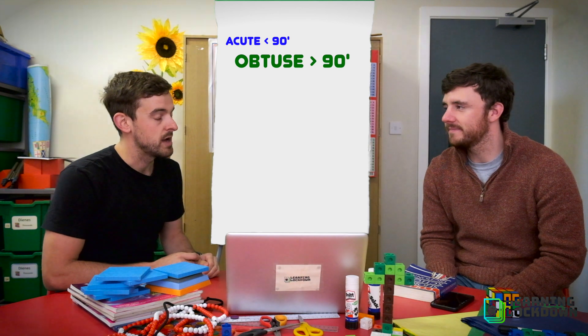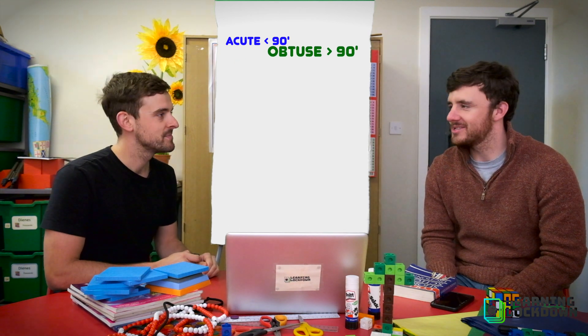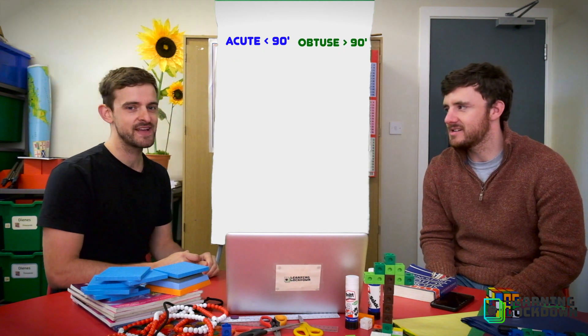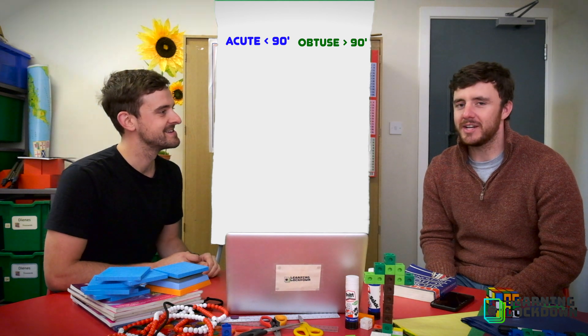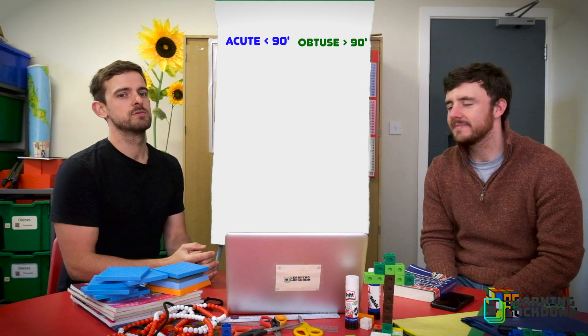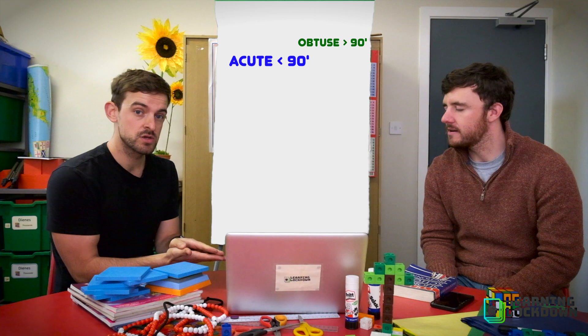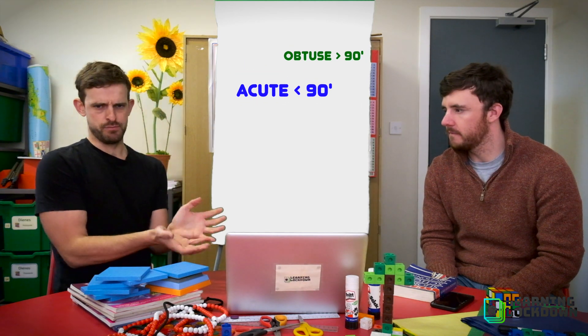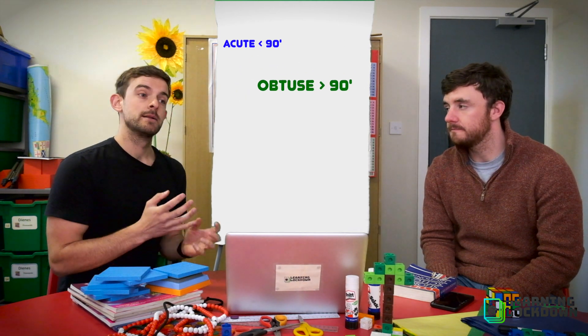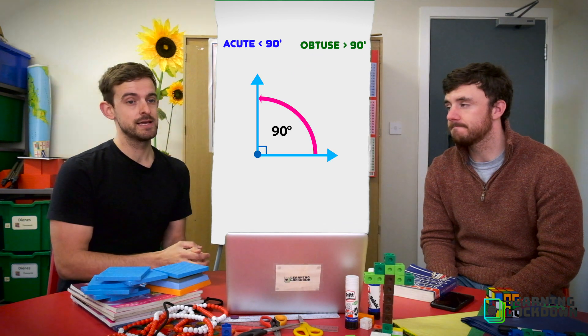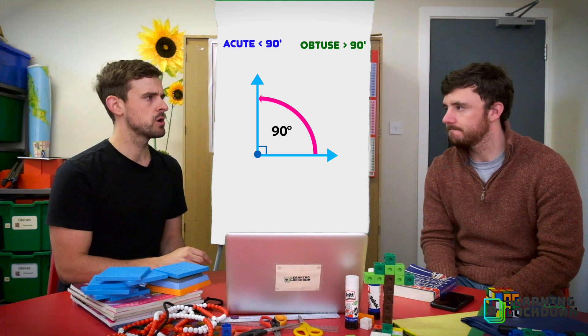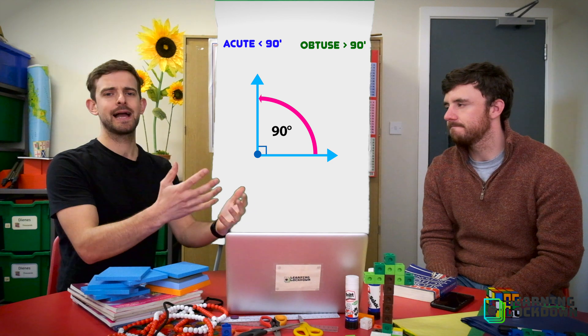Whatever helps you remember. Whatever helps you sleep at night. Whatever floats your boat. Whatever tickles your fancy. Whatever scratches your itch. So those are the two terms we need you to learn today. Acute, smaller than 90 degrees, and obtuse, larger than 90 degrees. But don't forget you still need that right angle in the middle because he is neither acute or obtuse. He is his own special angle.